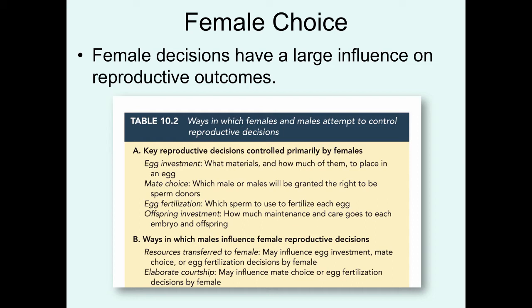Females can first make decisions regarding how much and what materials to invest in each egg that they produce. In some cases, they can choose which male or males to mate with, and if they mate with multiple males, they also have the option of selecting which sperm will be used to fertilize each of their ova. And then once the young are produced, how much to put into additional offspring investment, which typically takes the form of parental care.